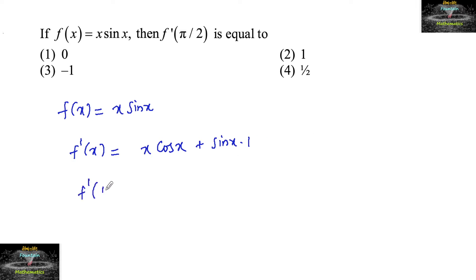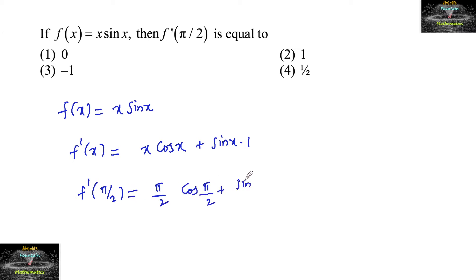Now f'(π/2) = (π/2)·cos(π/2) + sin(π/2). Since cos(π/2) = 0, the first term is 0. And sin(π/2) = 1. So the answer is 1.